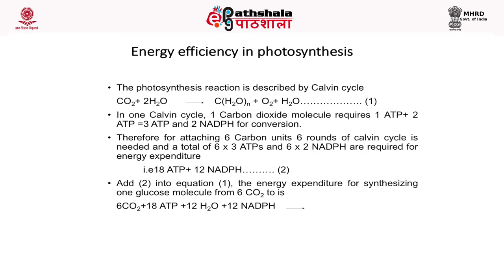In one Calvin cycle, one CO2 molecule requires 3 ATP (1 ATP plus 2 ATP) and 2 NADPH for conversion. Therefore, for attaching 6 carbon units, 6 rounds of the Calvin cycle are needed, requiring a total of 6×3 ATP and 6×2 NADPH as energy expenditure.